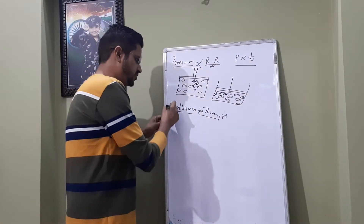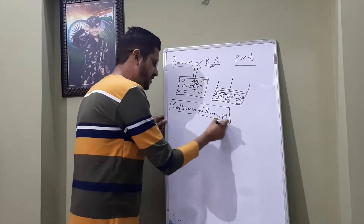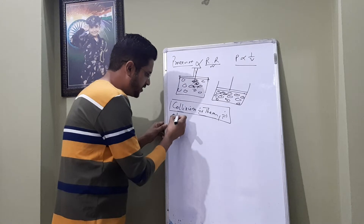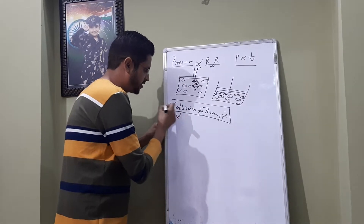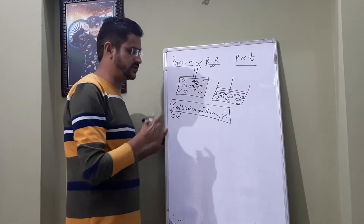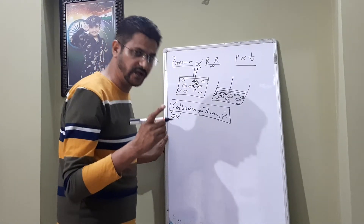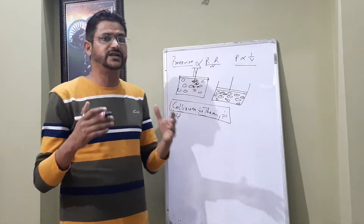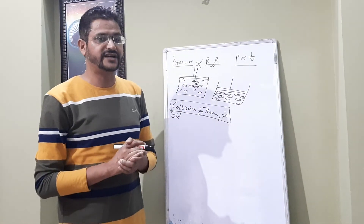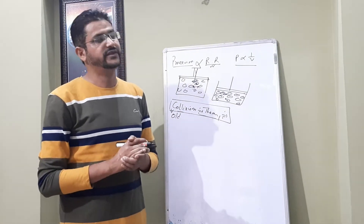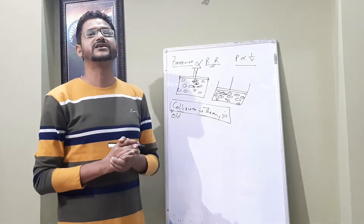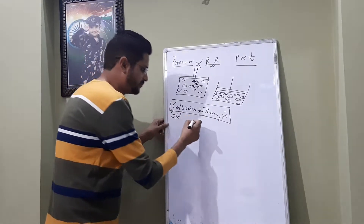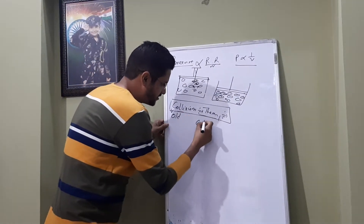According to the old collision theory, when the number of collisions between reactant molecules increases, the rate of reaction increases. An important term here is collision frequency. At normal temperature and volume, in unit time, the number of collisions between reactant molecules is called collision frequency.